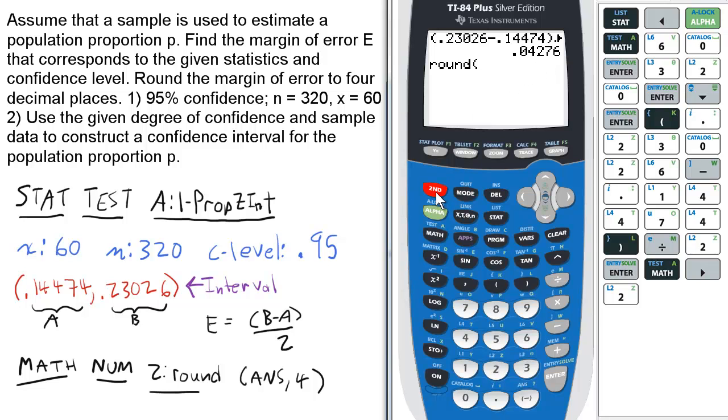Without reentering it, press 2nd and the negative symbol for ANS, then comma 4 for 4 decimal places, and enter. The answer rounded to 4 decimal places is 0.0428.